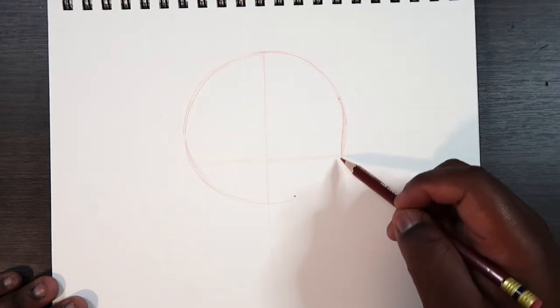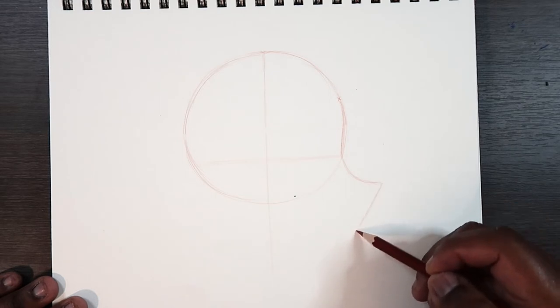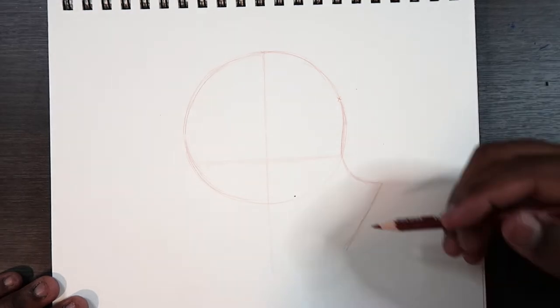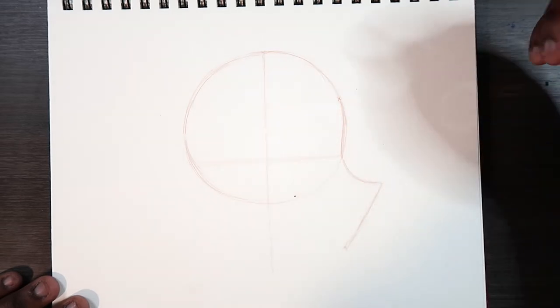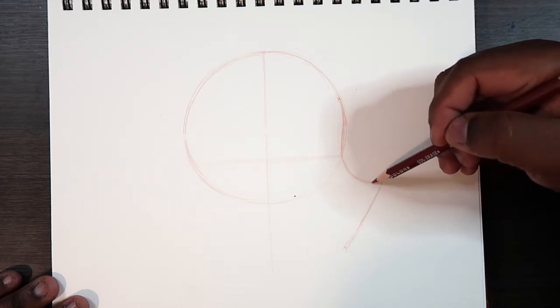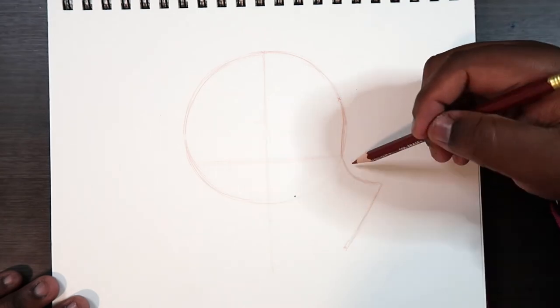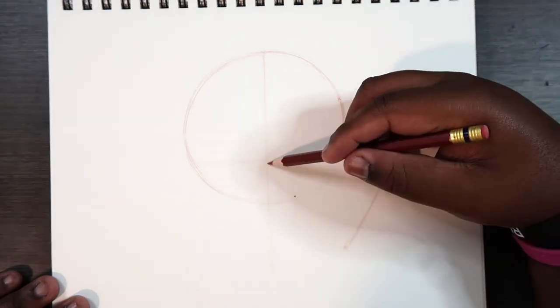Once we curve out for the nose, we're going to come back down to make sort of like a number seven. And then once we get to a stopping point, we're going to make this same curve but a lot larger. We're also going to connect this point up to here. So we're going to use a bigger version of this curve to connect this point back up to here.